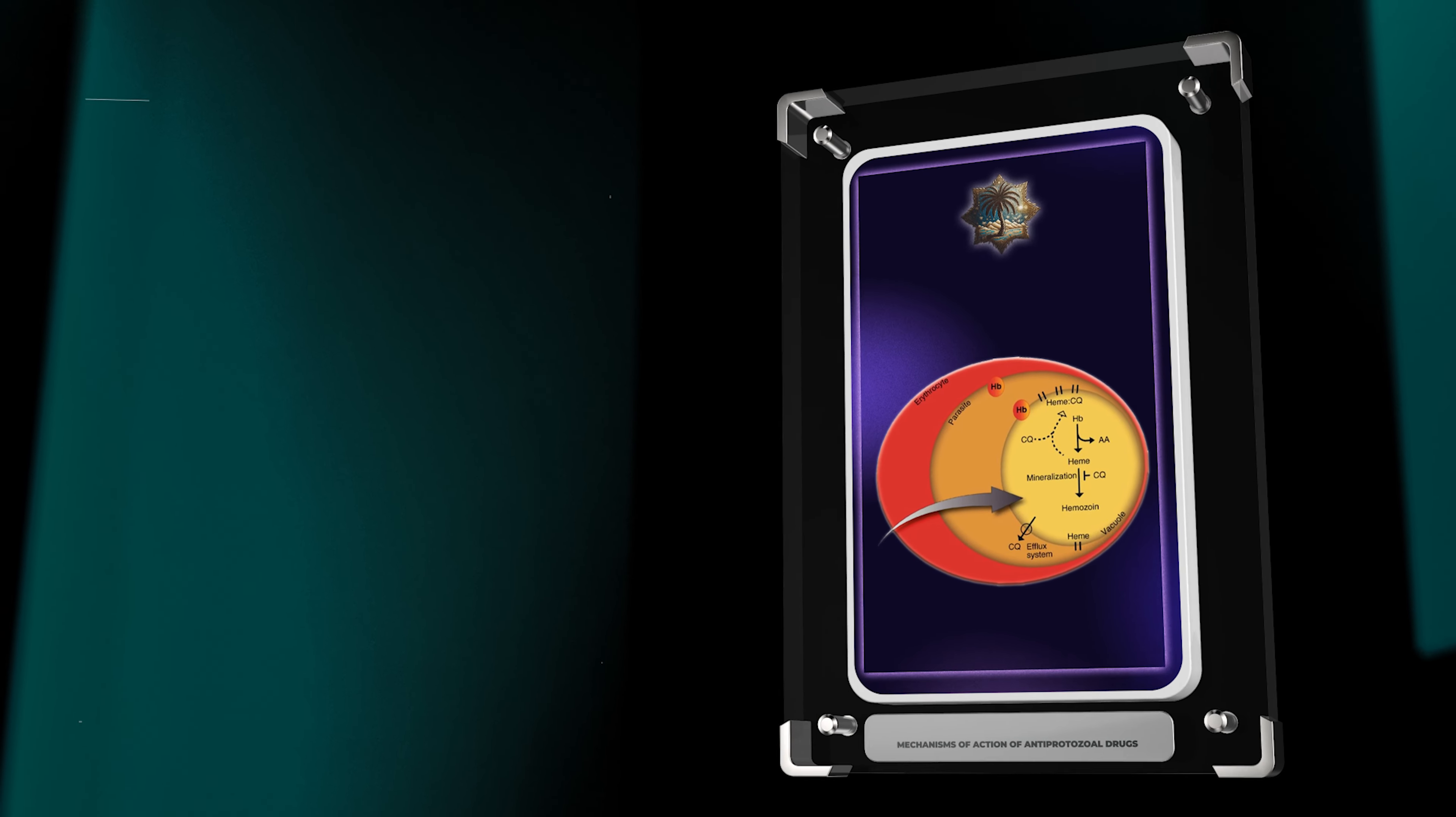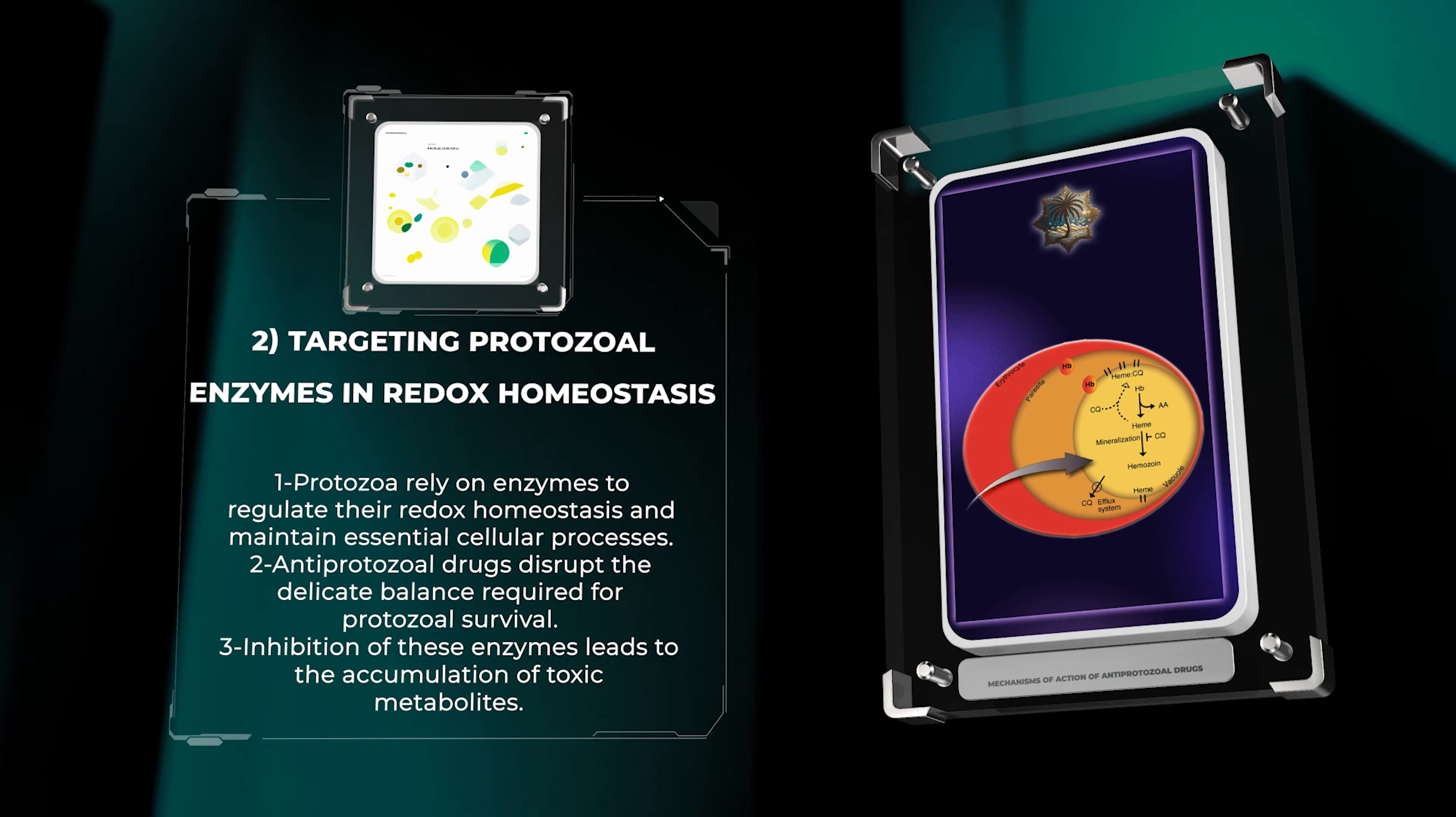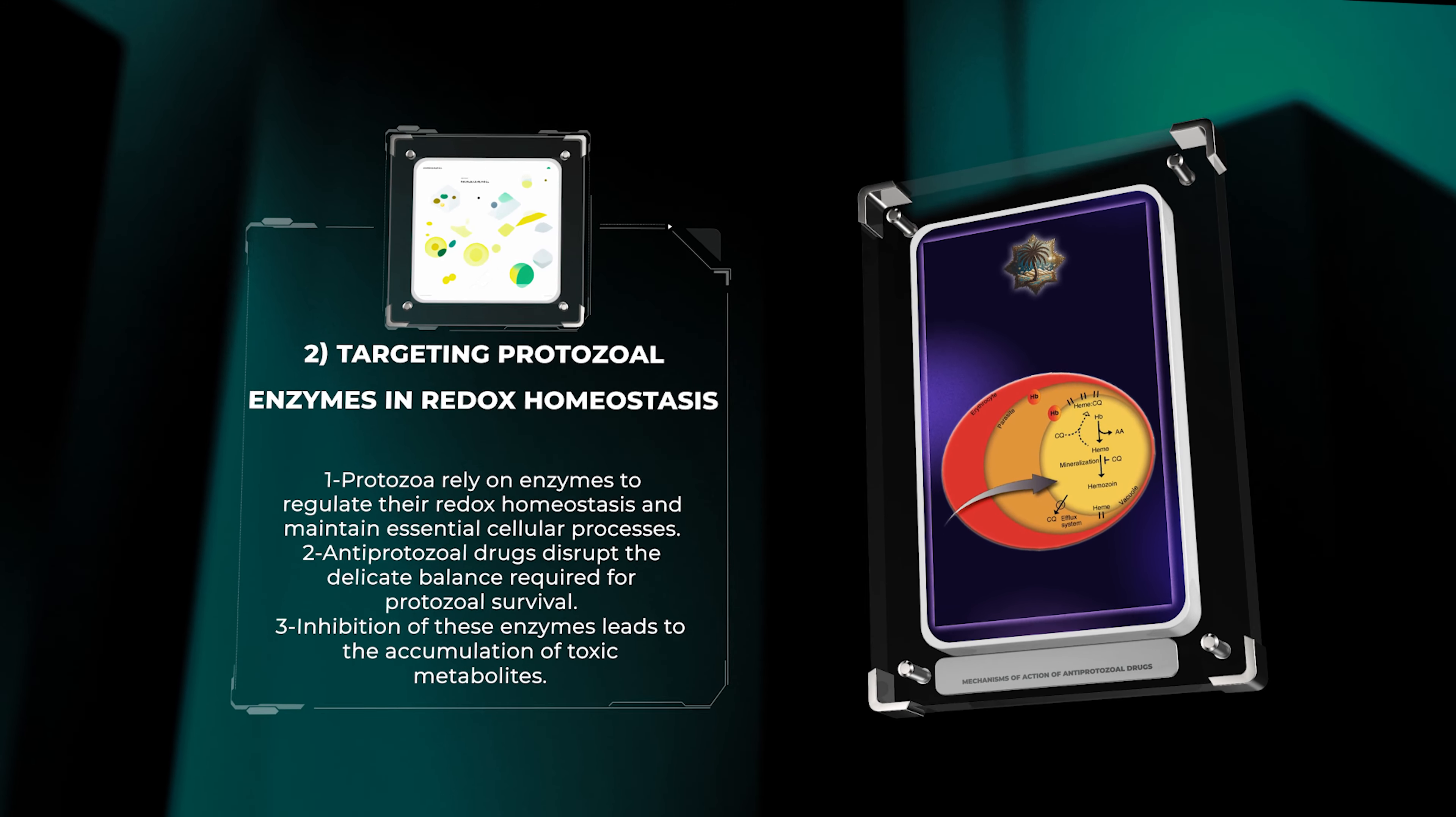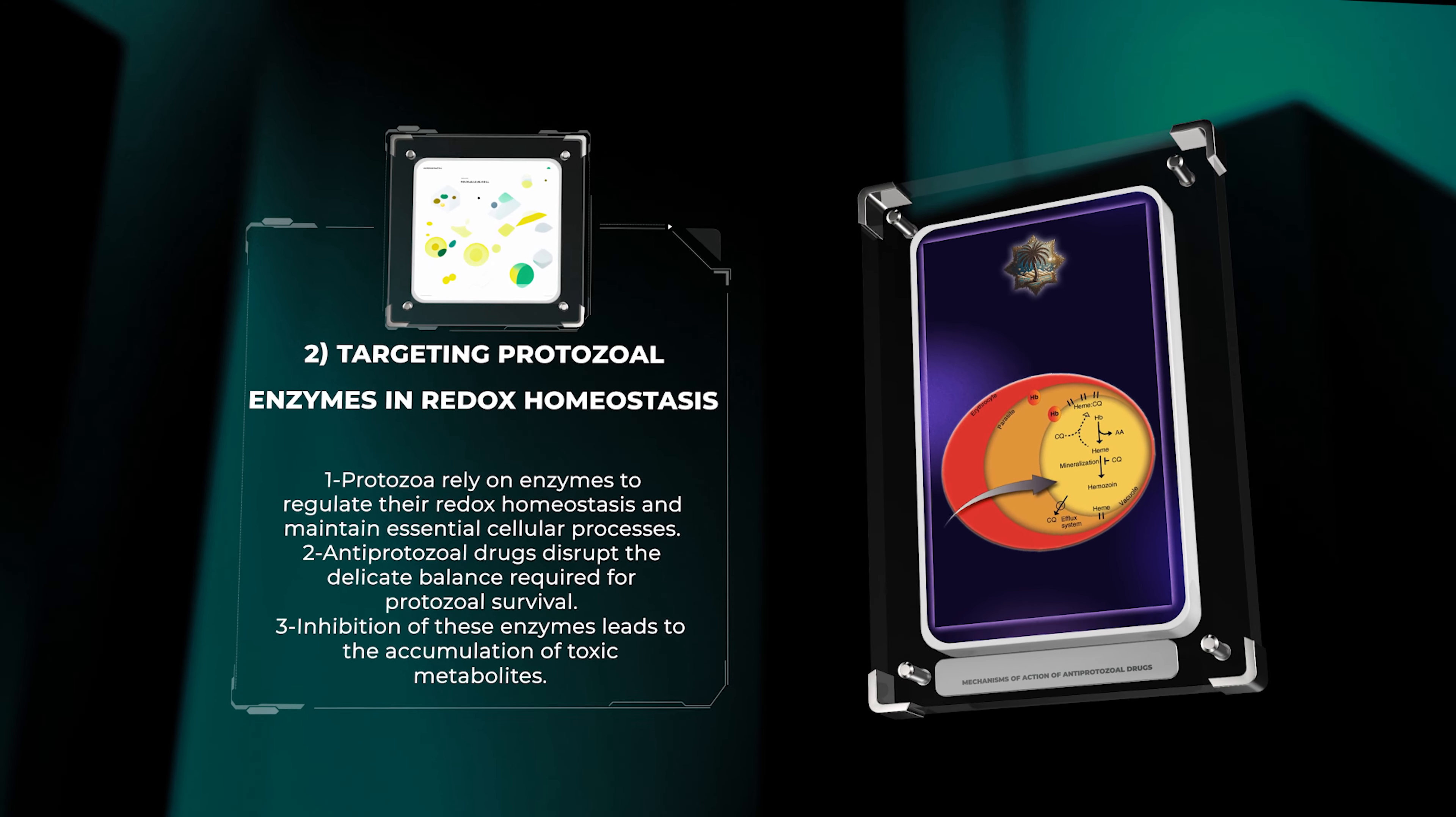Protozoa rely on enzymes to regulate their redox homeostasis and maintain essential cellular processes. By targeting specific enzymes involved in redox reactions, antiprotozoal drugs disrupt the delicate balance required for protozoal survival. Inhibition of these enzymes can lead to the accumulation of toxic metabolites, which ultimately hampers their growth and proliferation.